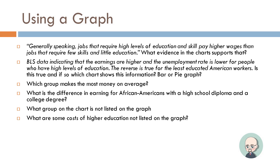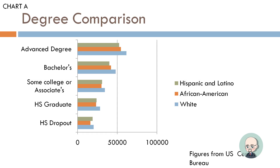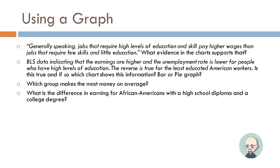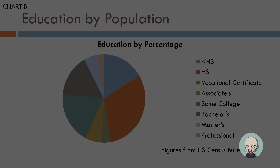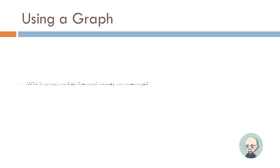Which group makes the most money on average? That question was a little ambiguous, but you might say persons with advanced degrees — specifically Caucasian persons with advanced degrees, followed by African Americans with advanced degrees, followed by Hispanic and Latino Americans. For the difference in earnings for African Americans with a high school diploma versus a college degree, we look at Chart A again. African Americans are orange: a bachelor's degree shows a little under $40,000, while a high school graduate looks like about $20,000–$25,000 — a difference of maybe $20,000, which is a lot of money.